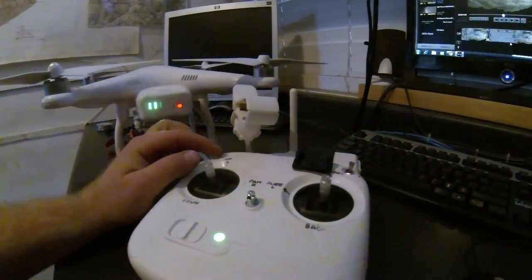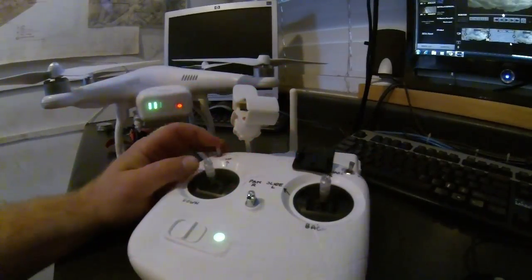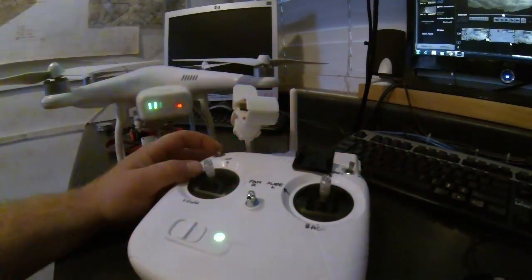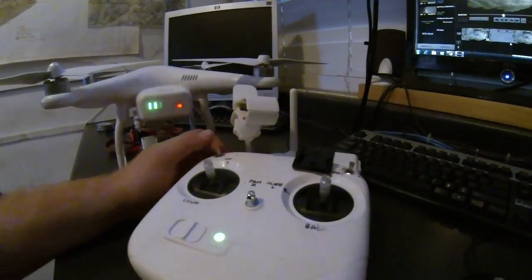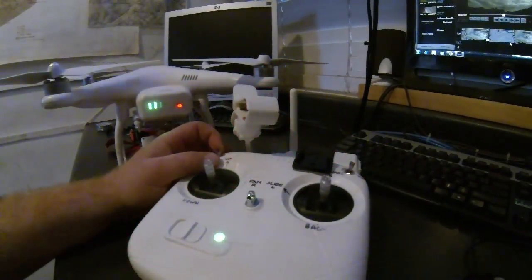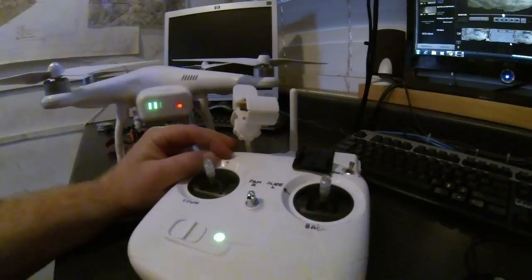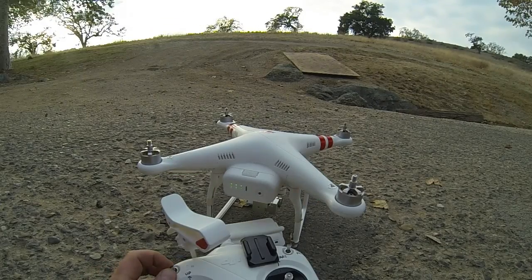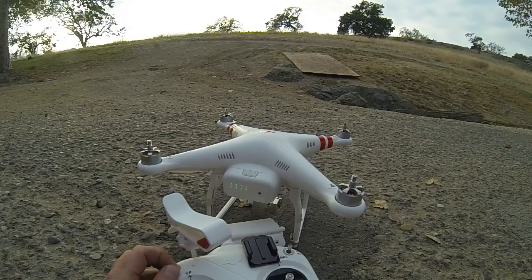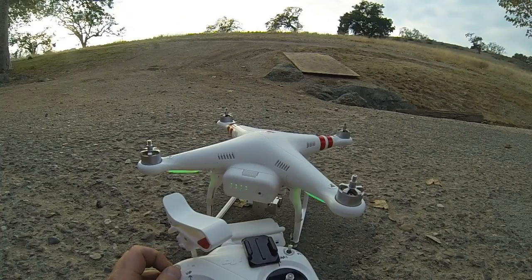On your IOC controller, whenever you want to reprogram a new return-to-home point, you're going to use the middle S2 and down S2 switch positions. And you're going to toggle between those two positions five times to reprogram the return-to-home point.